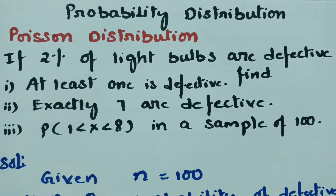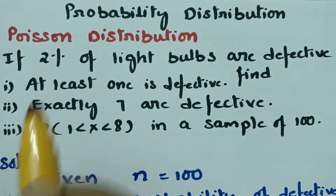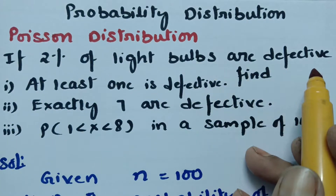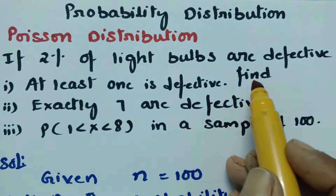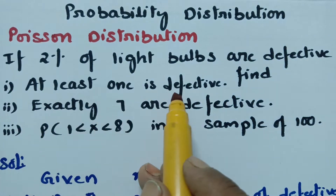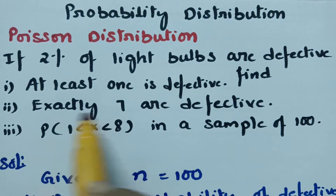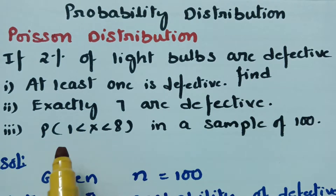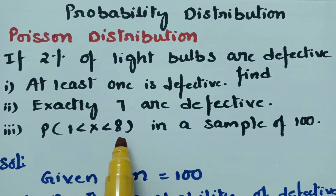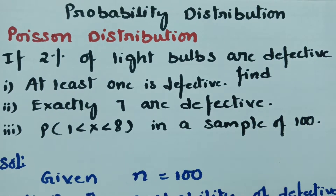This video is on Poisson distribution. In today's video, we are going to solve a problem that is the most important problem. If 2% of light bulbs are defective, then we have to find out: at least one is defective, exactly 7 are defective, and probability of 1 less than x less than 8, in a sample of 100.